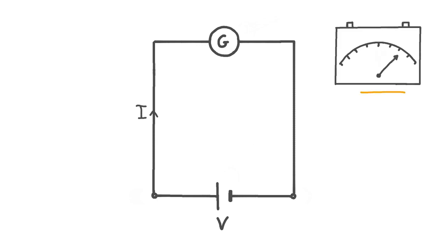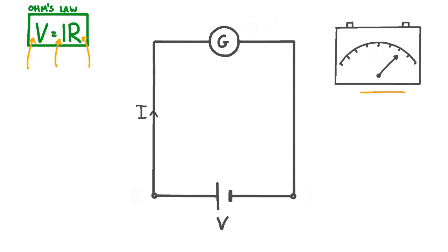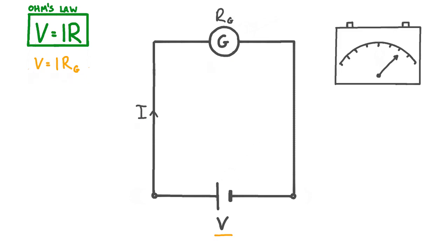This causes the needle on the galvanometer to deflect, and as long as the current isn't too big the deflection will be proportional to the current. Ohm's law tells us that the voltage applied to a conductor is equal to the current in that conductor multiplied by the resistance of that conductor. The voltage across our galvanometer, which is the same as the voltage supplied by the cell, is equal to the current in our galvanometer multiplied by the resistance of the galvanometer, which we can call Rg. So if we know the resistance of the galvanometer and the galvanometer tells us the current in the circuit, then we can work out the voltage of the cell simply by multiplying these two numbers together. So in this simple case, it looks like a galvanometer can function as a voltmeter.